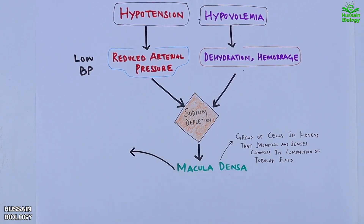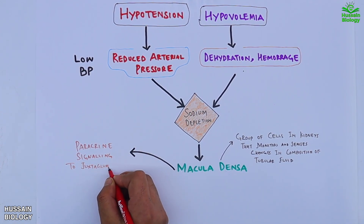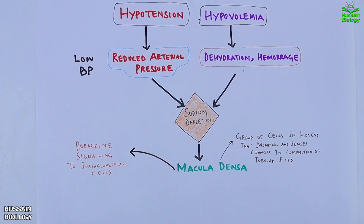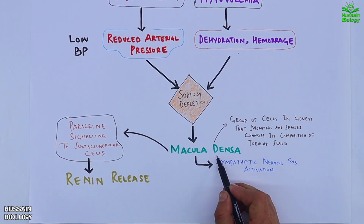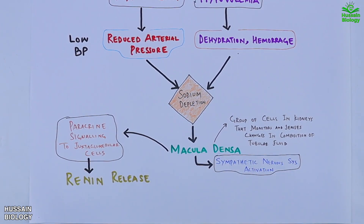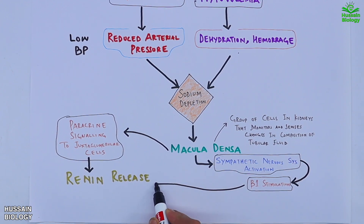The macula densa drives paracrine signaling to juxtaglomerular cells, where we get renin release. On the other hand, the macula densa also activates the sympathetic nervous system, where we get B1 stimulation of juxtaglomerular cells, and upon this stimulation we also get renin release.